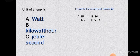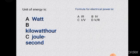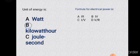The unit of energy is kilowatt-hour or joule. What is the formula for electrical power? That is P = IV, so option B is correct.